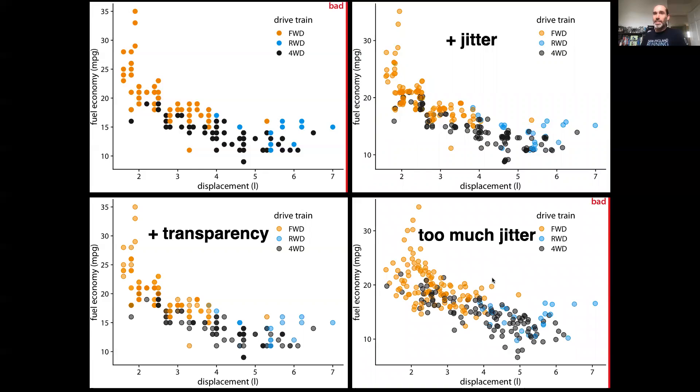That said, you want to be careful with jitter to not overdo it, because you can over jitter data and obscure the actual underlying pattern in the data itself. In this case, we've smoothed out this relationship a bit too much and distorted the original data by jittering too much.